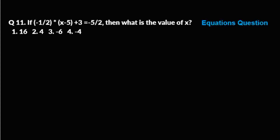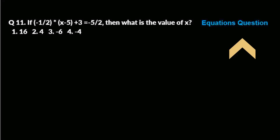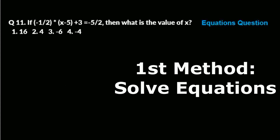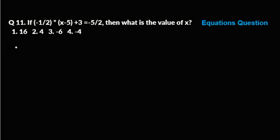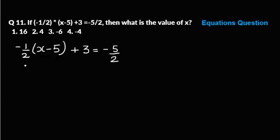The next question: if minus one by two into (x minus five) plus three is equal to minus five by two, then what is the value of x? You have been given four options. This is an equations question. Let us try solving it first: minus one by two into (x minus five) plus three equals minus five by two.